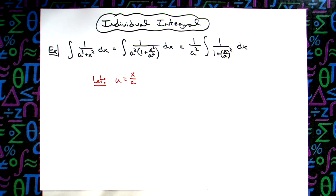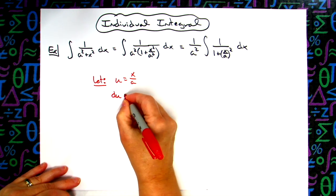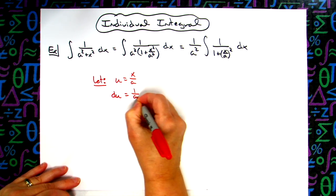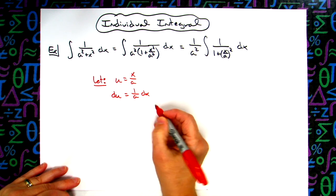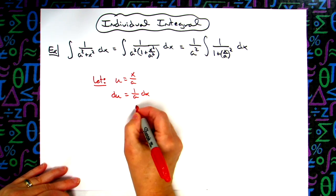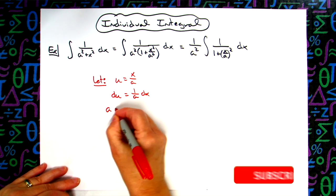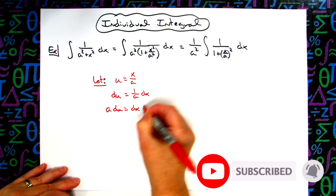I'm going to go ahead and take the derivative of both sides. So we'll have du is equal to 1 over a dx. And then we're going to go ahead and solve all the way down for that dx, multiplying both sides by a. So we'll have a du is equal to dx.